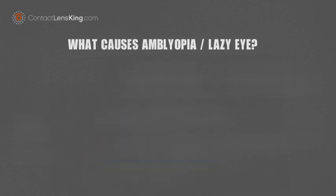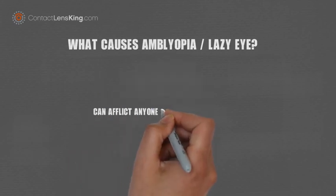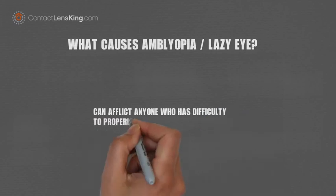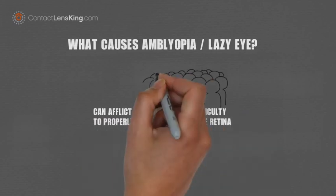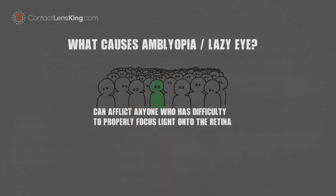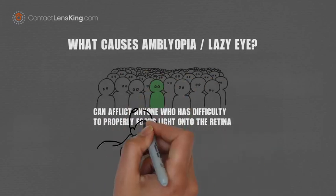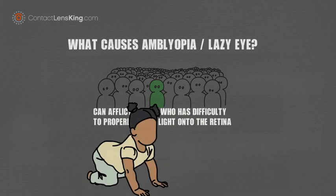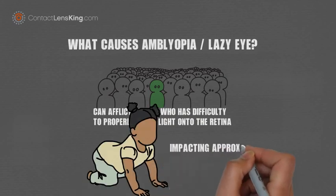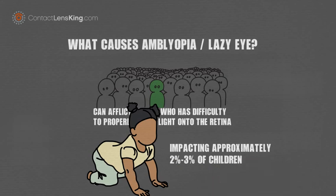In fact, anyone who exhibits difficulty to properly focus light onto the retina and seeing clearly can be afflicted. Lazy eye is a common visual impairment among children, where the incidence of occurrence is between 2 to 3%.